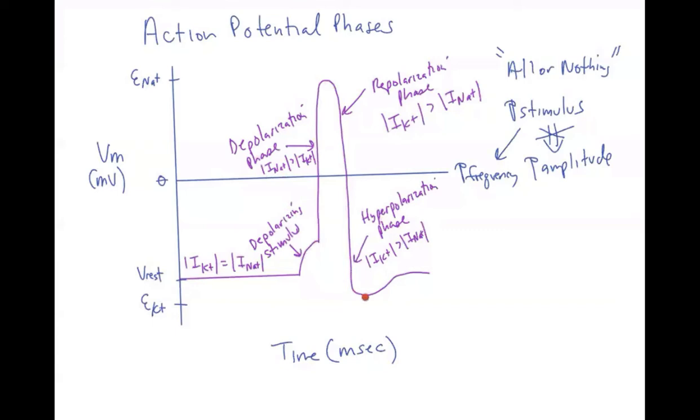And then as those channels close, you go back to the normal resting state where we started. Now, the height of the action potential is limited by the E-sodium if it's a sodium-based action potential. If you do something to change the E-sodium, you can do that by changing the concentration of sodium, and you modify the E-sodium, you could influence the height.